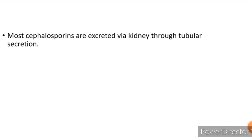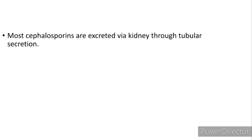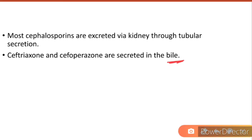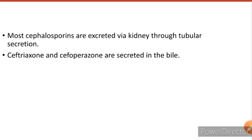Most cephalosporins are excreted via the kidney through tubular secretion. Ceftriaxone and cefoperazone are secreted in the bile — this is important, you need to memorize it. Ceftriaxone has 'ONE' in its name, so it belongs to the third generation.